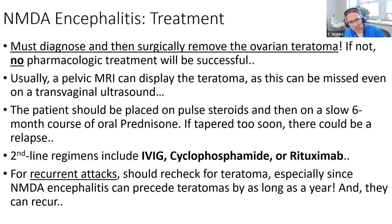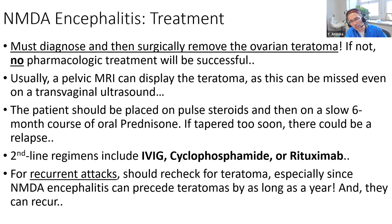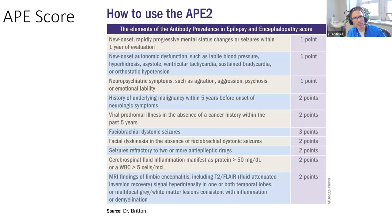First-line treatment is usually pulse steroids followed by a slow prednisone taper - tapering too quickly can cause relapse. Many people don't respond to that, so some add IVIG. Third-line includes rituximab. Some physicians are using steroids, IVIG, rituximab, and an IL-6 inhibitor like tocilizumab all at once, which is quite aggressive. You also want to use the APE score - if features like mental status changes, autonomic changes, neuropsychiatric changes, prior malignancy, prodromal illness, dyskinesias, seizures, abnormal CSF, or abnormal MRI add up to over four or five points, it's strongly consistent with autoimmune encephalitis.